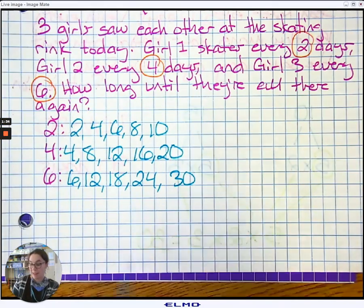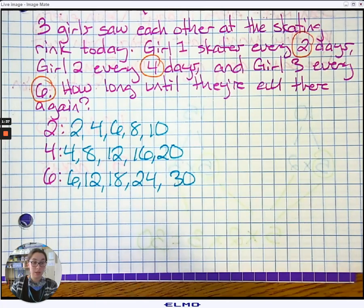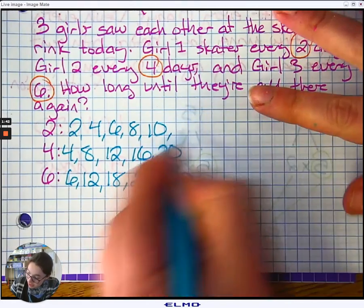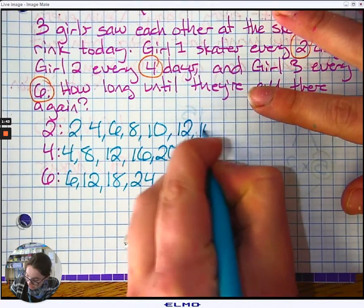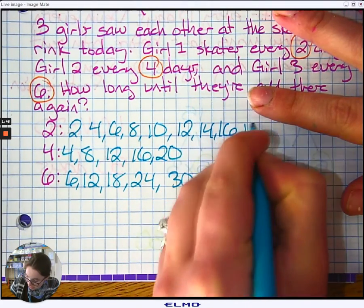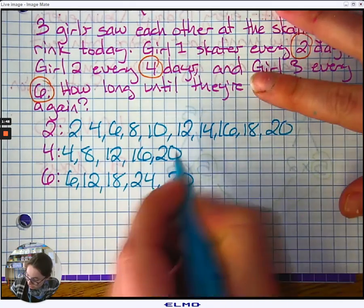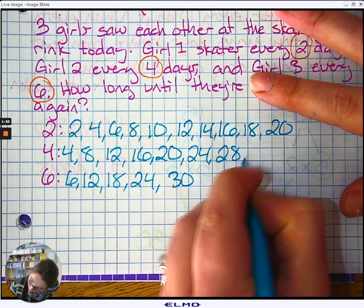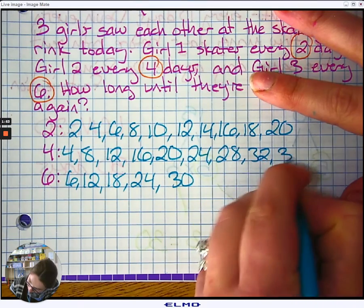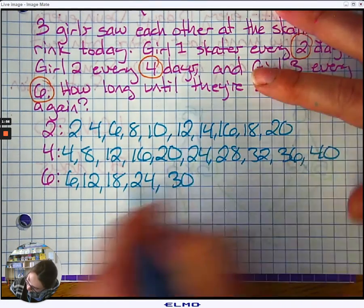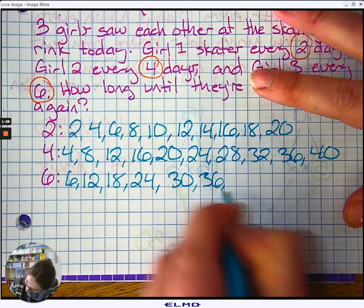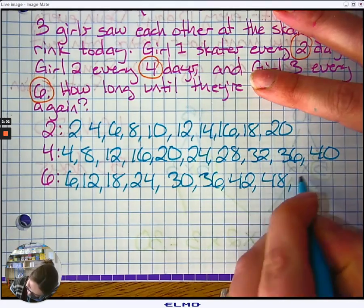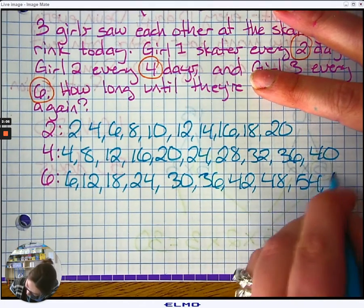So what we have to do here is continue going. We're going to have to add more. So I'm going to add a few more over here to two: ten, twelve, fourteen, sixteen, eighteen, twenty. We'll add a few more to four: twenty-four, twenty-eight, thirty-two, thirty-six, forty. And six: thirty-six, forty-two, forty-eight, fifty-four, and sixty.